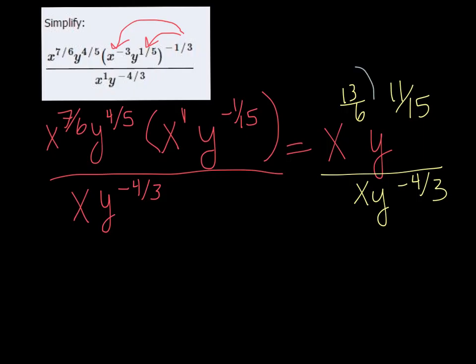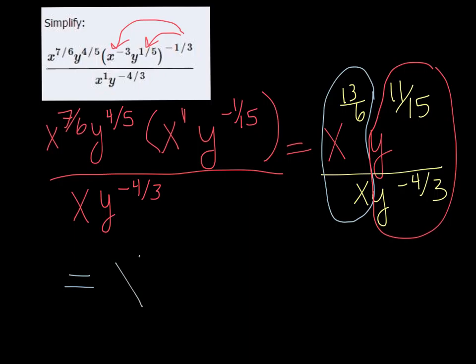So now we can see that we have x's in the top and the bottom, and we also have y's in the top and the bottom. So what we do here is we use the quotient rule, and we subtract the exponents. So it's 13 over 6 minus 1, and for that we get 7 sixths. So x to the 7 sixth.